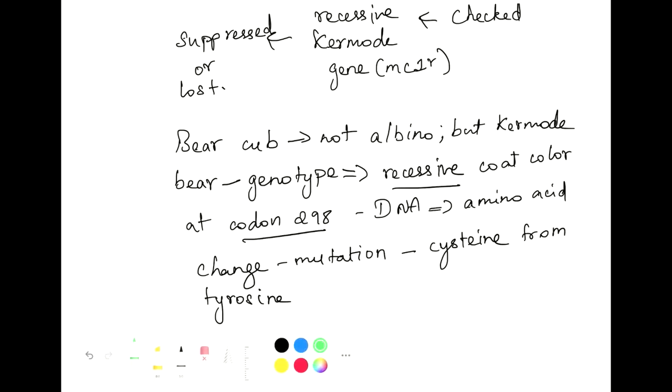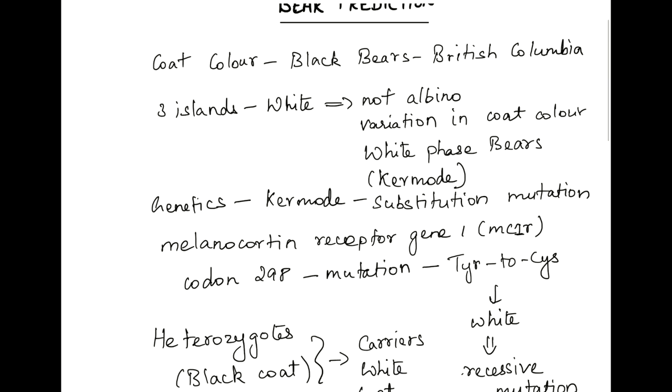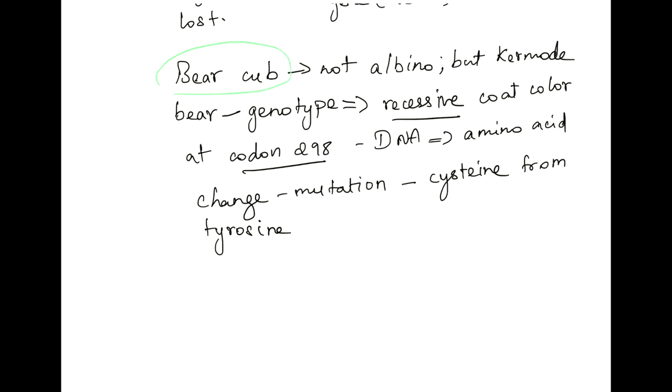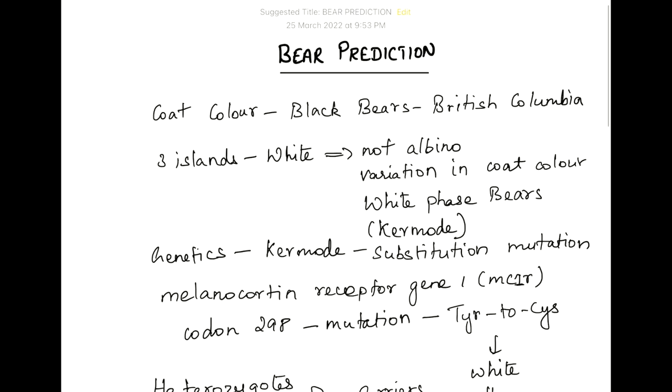Thus, in today's class we try to predict the bear genotype for a bear cub which is a kermode bear. We found that it will have a recessive coat color located at codon 298, which means the DNA expressing the amino acid would have cysteine which is actually a mutation of tyrosine. Thank you for attending today's topic and we will see you again in another topic.